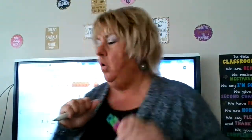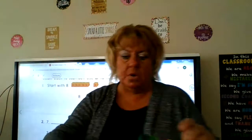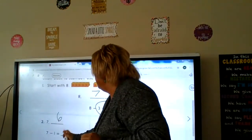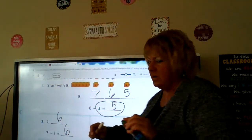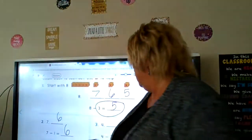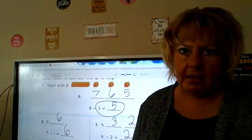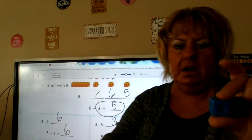In subtraction we break the whole into two parts; in addition we add two parts together to make the whole. Seven minus one: one, two, three, four, five, six, seven — take away one and count backwards: seven, six. Seven minus one is six. Check it: is 6 plus 1 equal to 7? Yes! Four take away two: four, three, two — four minus two is two. Check it: is 2 plus 2 equal to 4? Yes!